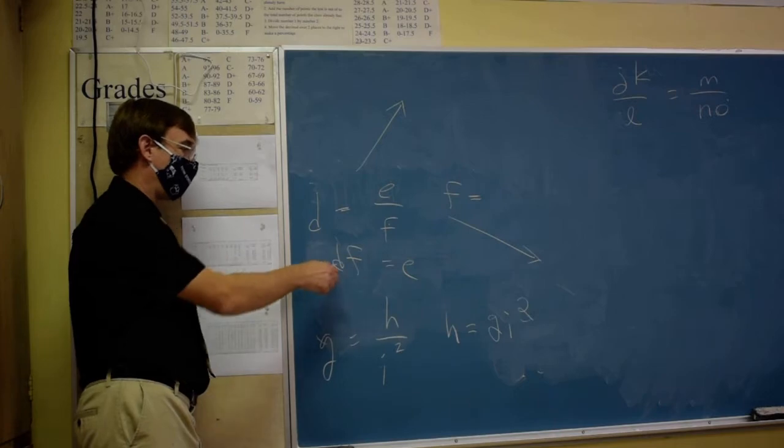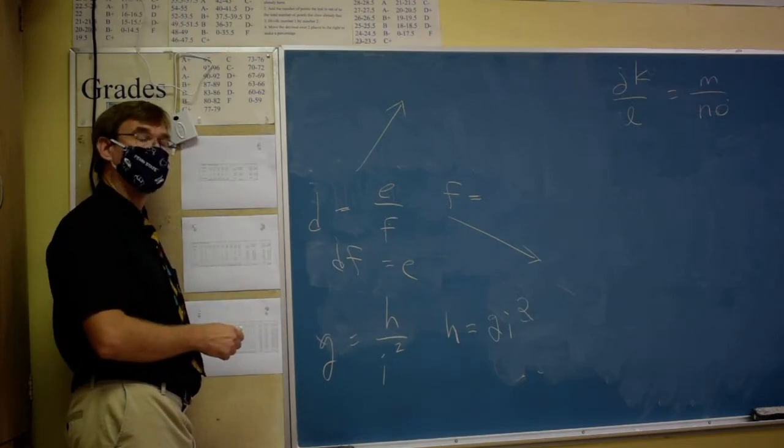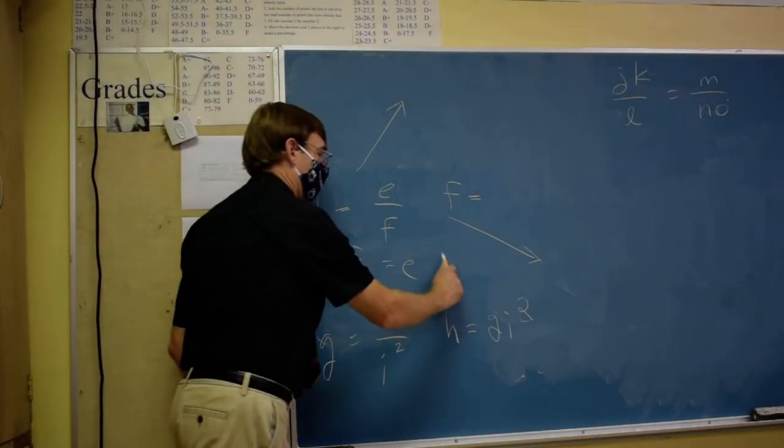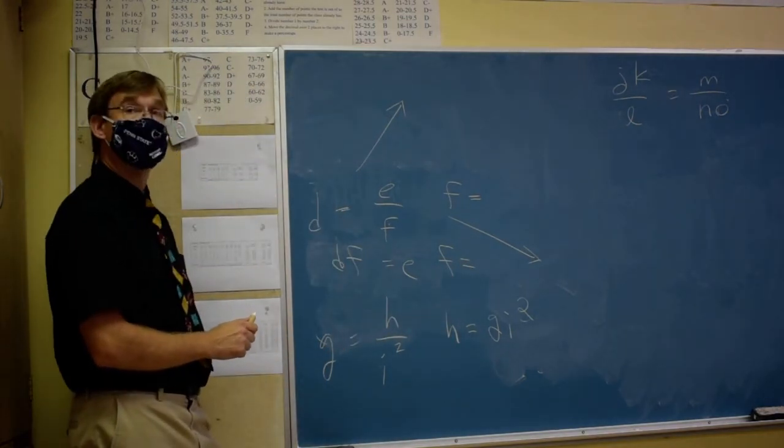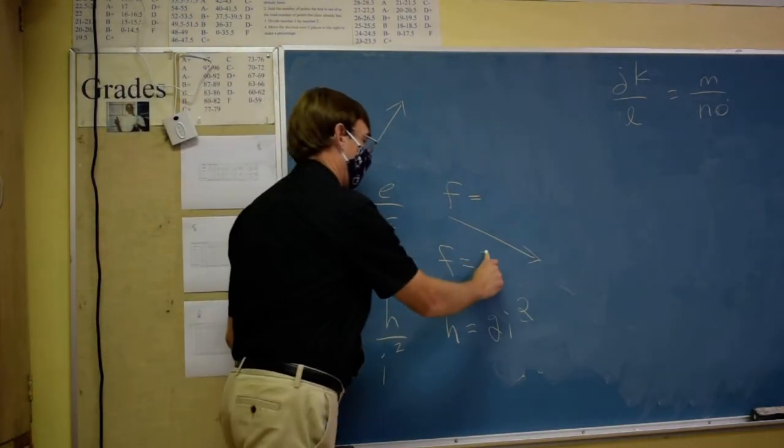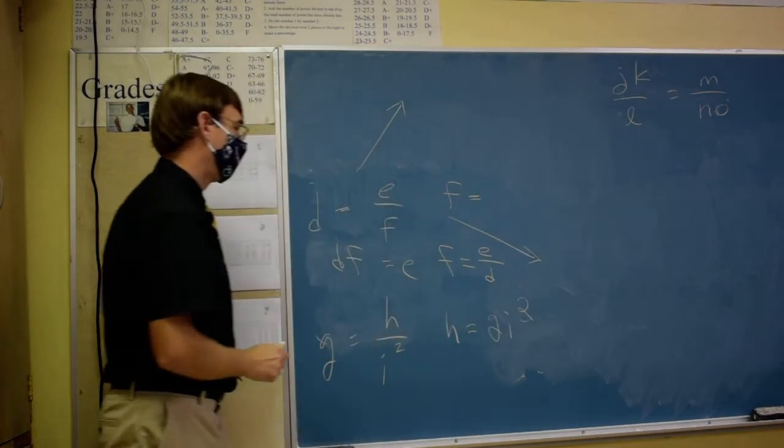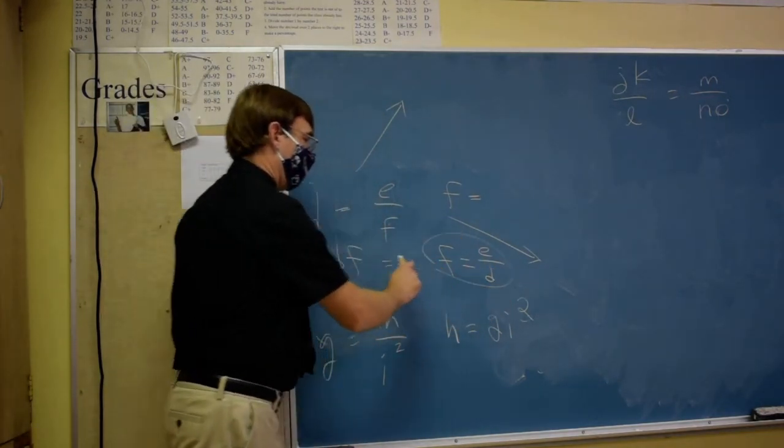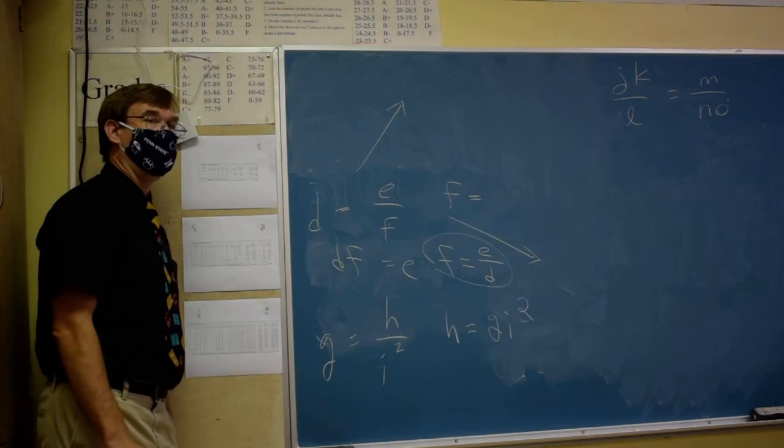Then how would you carry that through to completion? Divide by D. Divide by D. So F, in the end when alone, is E over D.